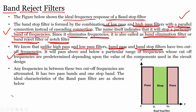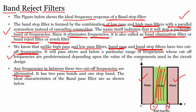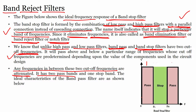Any frequencies between the two cutoff frequencies FL and FH are attenuated, while frequencies outside this range pass easily. So the band reject filter has two pass bands and one stop band. The ideal characteristics of the band reject filter are shown here — this is the ideal frequency response.